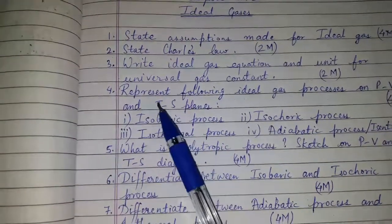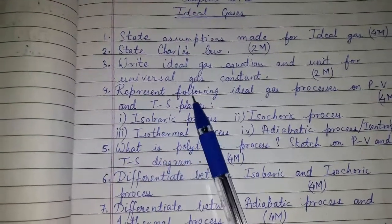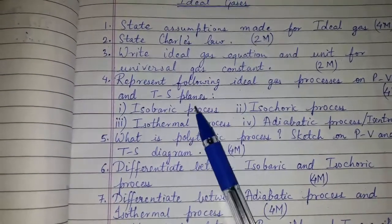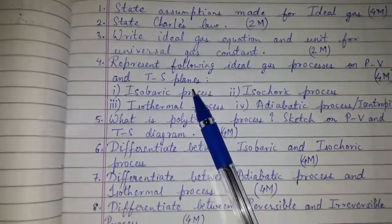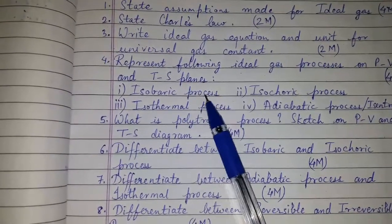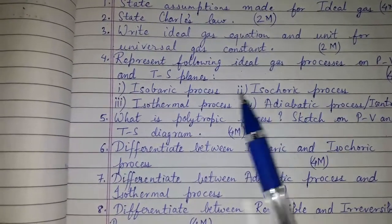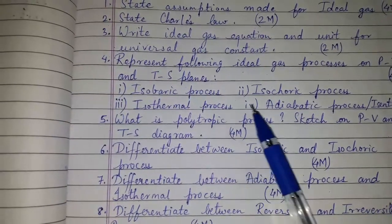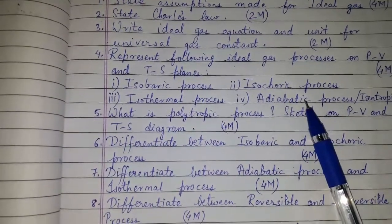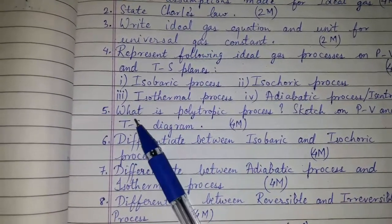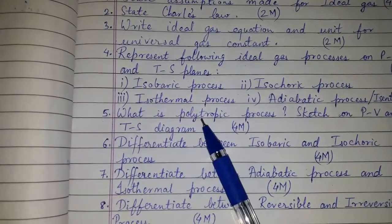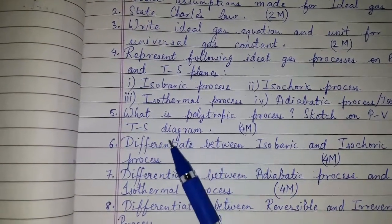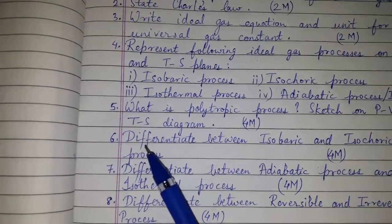Represent the following ideal gas processes on PV and TS planes for four marks: isobaric process, isochoric process, isothermal process, adiabatic or isentropic process. Also, what is polytropic process — sketch on PV and TS diagram — for four marks.